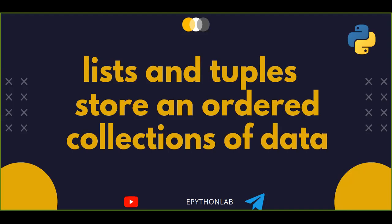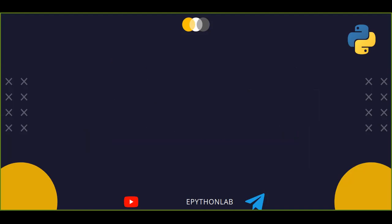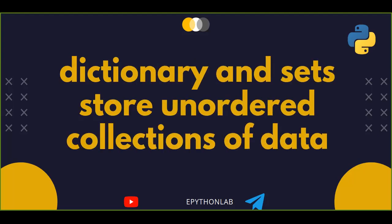Lists and tuples store ordered collections of data — the data stored in lists and tuples is in order. Dictionaries and sets, on the other hand, store unordered collections of data. So dictionary and sets store unordered collections of data, while tuples and lists store ordered collections of data. Those are the differences.